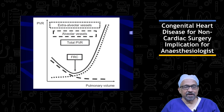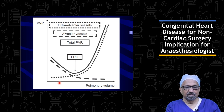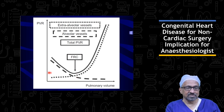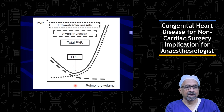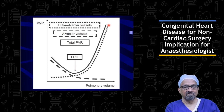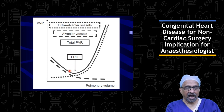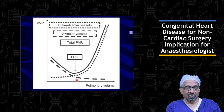Another factor to keep in mind is that pulmonary vascular resistance also depends on lung volumes. The pulmonary vascular resistance is lowest when lung volume is at the functional residual capacity. Both at low lung volumes — for example, in a patient with lung collapse — and at high lung volumes — for example, with overdistended alveoli — the pulmonary vascular resistance is increased. Patients with pulmonary hypertension or left-to-right shunts should ideally be managed with tidal volumes at this optimal range.